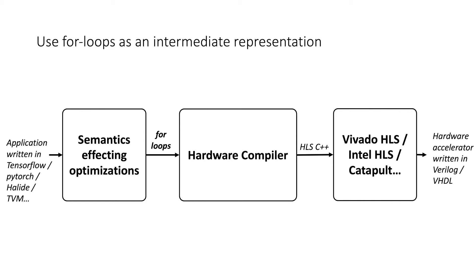It's a good idea, at least at the front of the hardware compiler, to use for loops as an intermediate representation as well as an output target for HLS. Frameworks like TensorFlow, PyTorch, Halide, and TBM are basically frameworks for writing dense linear algebra — programs that iterate over tensors in a dense way, updating values stored in multi-dimensional arrays. Halide and TBM de-sugar directly into for loops, making them a really nice intermediate representation that also gives you access to a ton of knowledge about software optimization.